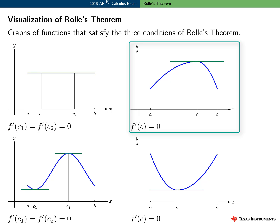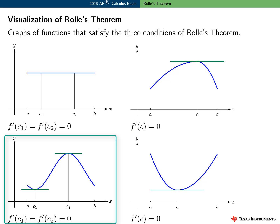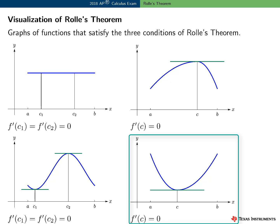In this example, the graph of f is continuous and smooth — that is, f is differentiable — f of a equals f of b, and there is a value c such that the tangent line to the graph of f is horizontal, and therefore f prime of c equals zero. In this example, there exist two values of c such that f prime of c equals zero. And here's one more example where the graph of f is continuous and smooth, f of a equals f of b, and there is a value c such that f prime of c equals zero.